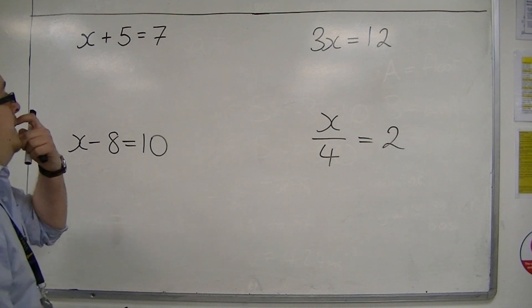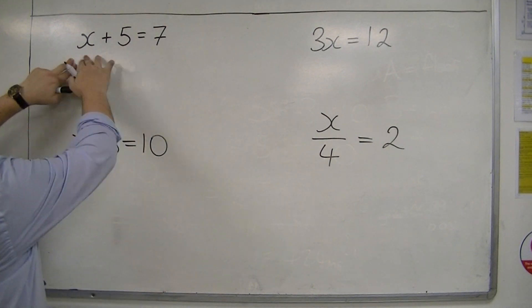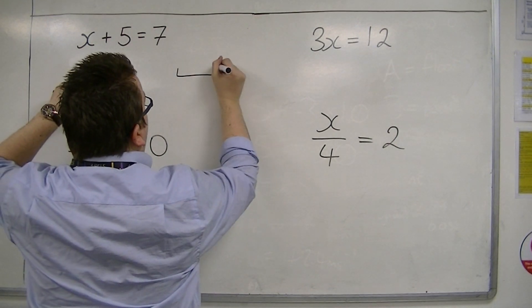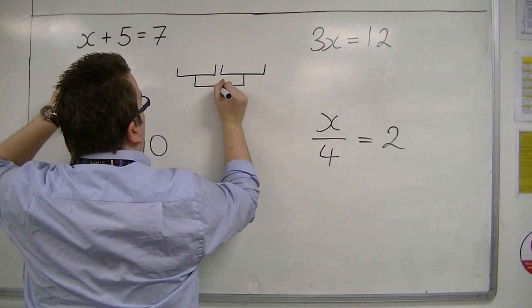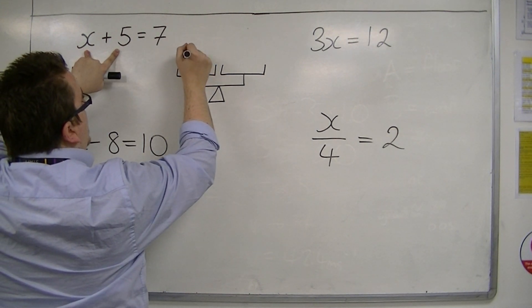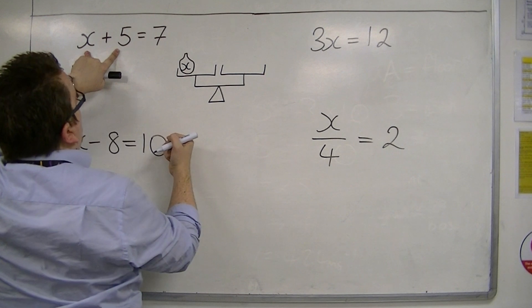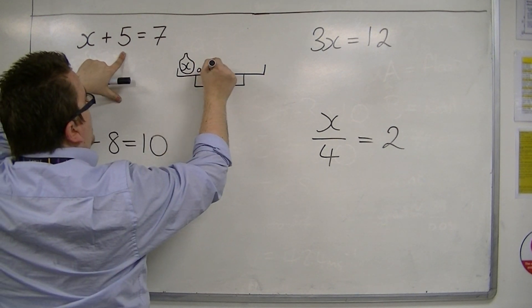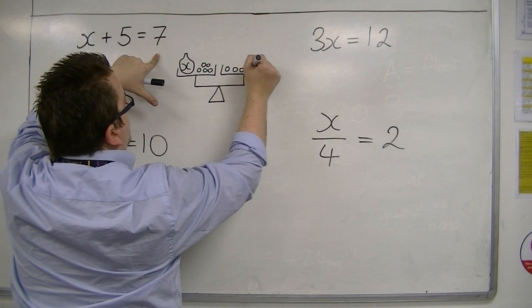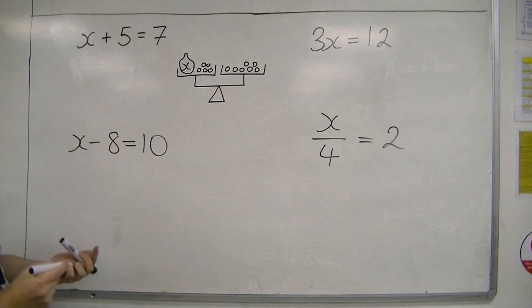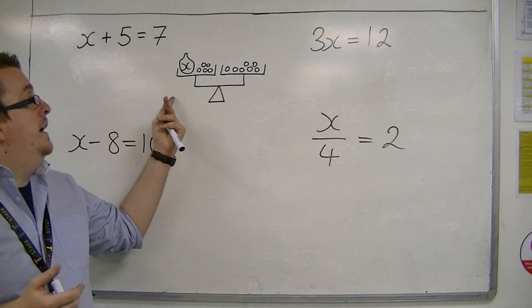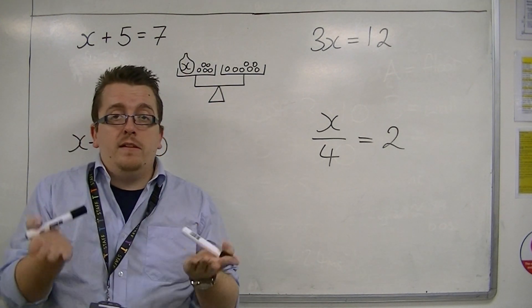Now, the concept is that if I was going to look at x plus 5 equals 7 as a balancing scales problem, what it means is that in order to balance the scales, on one side of my scales, I have x plus 5. So you can think of x as being, maybe, a bag. And then 5 could be five little bits. Then, on the right-hand side, I've got seven bits. And the scales are perfectly balanced.